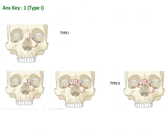A type 2 fracture is a comminuted fracture. However, the canthal ligament is still attached to the primary bone and there is no displacement of the canthal ligament. Type 2 fractures have more fragments present as opposed to type 1.